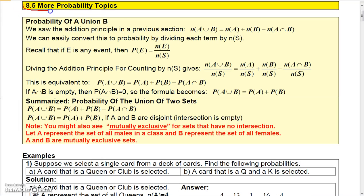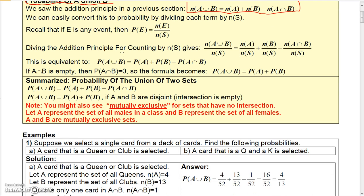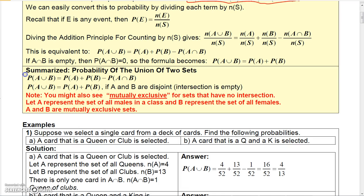We're going to talk about some more probability topics — basically three topics. We're going to start with the probability of A union B. In counting, the number of elements in A union B equals the number in A plus the number in B minus the number in A intersect B. The probability of A union B can be found the same way using probabilities: P(A∪B) = P(A) + P(B) - P(A∩B).